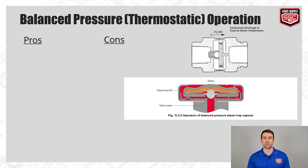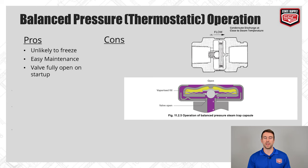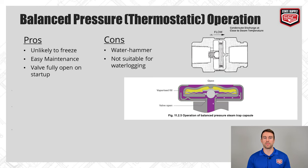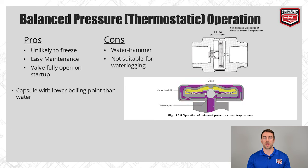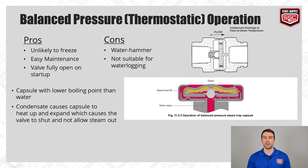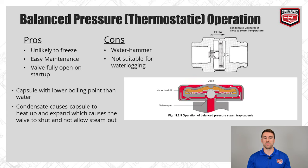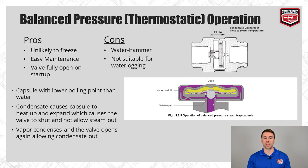For the balanced pressure trap, some pros are that it's unlikely to freeze, it's easy to maintain, and the valve is fully open on startup. Some cons are that it is susceptible to water hammer and it's not suitable for water locking. The balanced pressure trap operates on the principle of a capsule containing a liquid mixture that boils at a lower temperature than water. As hot condensate passes through the trap chamber, it causes the liquid mixture to boil and close off the valve, preventing steam from escaping. Once closed, the capsule mixture gives off heat to the surrounding condensate, the vapor condenses, and the valve opens again, allowing condensate to pass through.